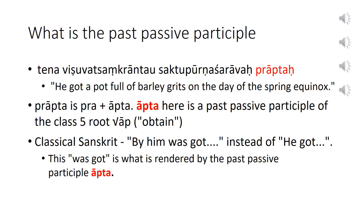We have encountered the past passive participles many times in our stories. It is very commonly used in classical Sanskrit to make sentences. For example, in the Hitopadesha story 'The Brahmin and His Jaar' in lesson 11, we saw the sentence with the use of the word 'praapta', which is 'pra' plus 'aapta'. Aapta here is a past passive participle of the class 5 root 'aap', as we explained in the lesson. In classical Sanskrit, it is common to say 'by him was got' instead of 'he got' when rendering sentences. This 'was got' is what is rendered by the past passive participle 'aapta'.